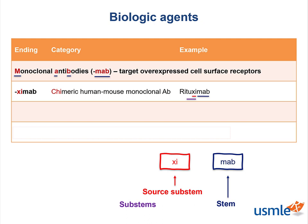The substem before that is called the target substem and tells us what our monoclonal antibody is targeting. The 'TU' in rituximab tells us it's targeting a tumor or cancer.